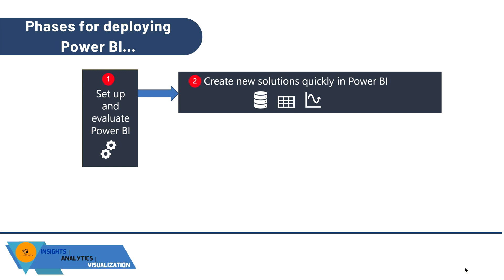Phase 2 is to create new solutions quickly in Power BI. Self-service BI authors can begin using and evaluating Power BI for their needs, and value can be obtained quickly. You can prepare a proof of concept or trial it in your organization, and you can take advantage of Power BI trial licenses, which provide all Power BI Pro or Power BI Premium per user license benefits for 60 days when signing up with a school or organizational email address.